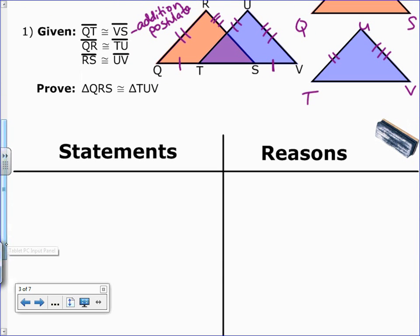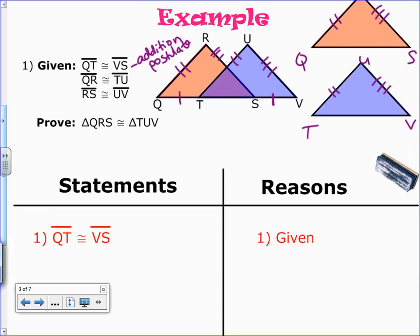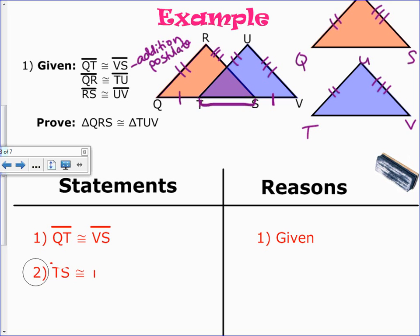We said there would be four steps. The first step is to state your given: QT congruent to VS. Next, you need to see what the overlapping is because I'm going to be adding that to both sides. If I look here in the overlapping, it's TS. That's my overlapping piece. I need to name that congruent to itself. When a quantity is congruent to itself, that's the reflexive property.